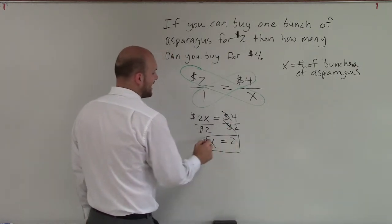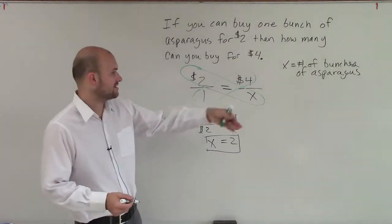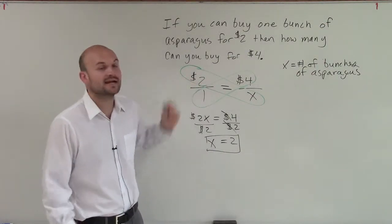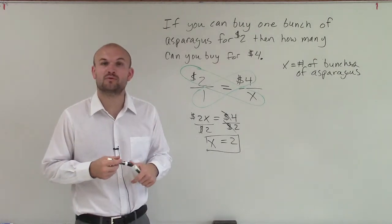So therefore, I can buy two bunches of asparagus when I have $4, as long as I can buy one for $2. So there you go, ladies and gentlemen. That is how you solve using proportions. Thanks.